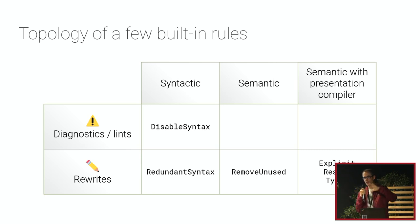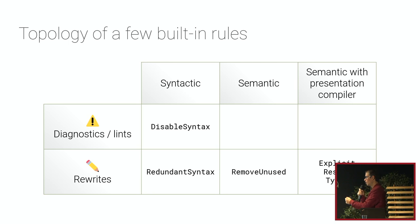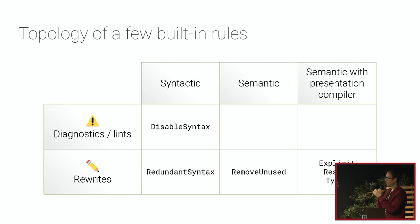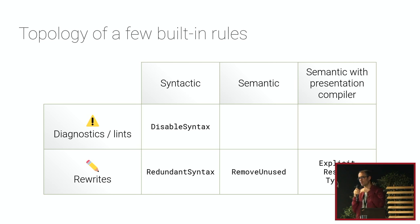Some rules only raise warnings or lints while others might suggest what you can do to fix the warning. Syntactic rules browse the tree without any information about what symbols actually represent, while semantic rules like RemoveUnused rely on compiler output. That's the key difference.